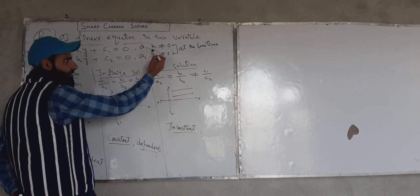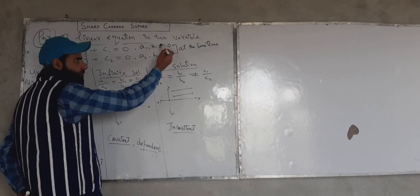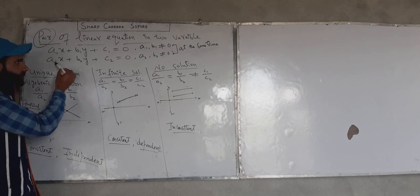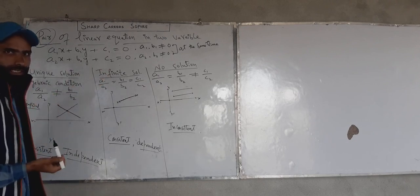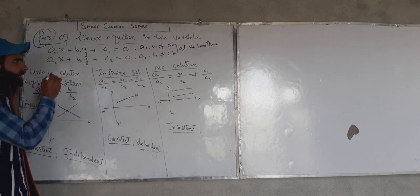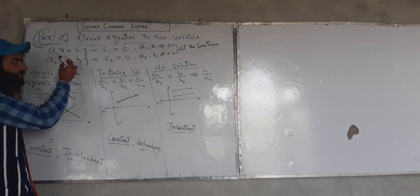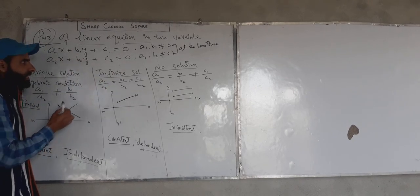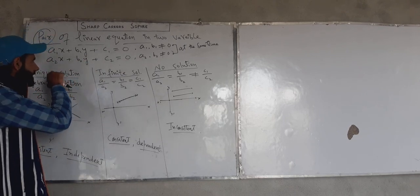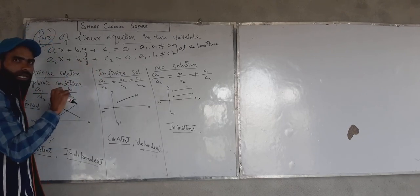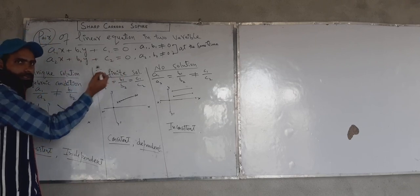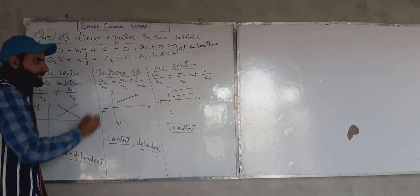Provided a1b1 and a2b2 must not be equal to 0, and a1b1c1, a2b2c2 must belong to real numbers. a1b1c1 are the coefficients of equation first and a2b2c2 are the coefficients of equation second. One stands for equation first and two stands for equation second.